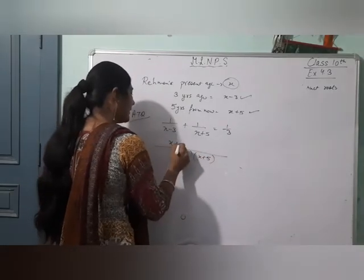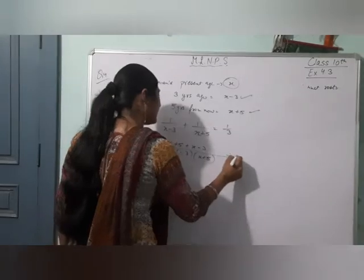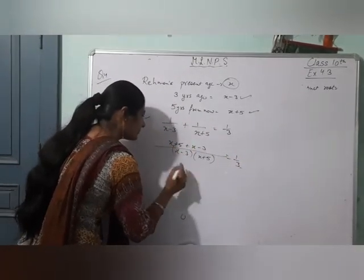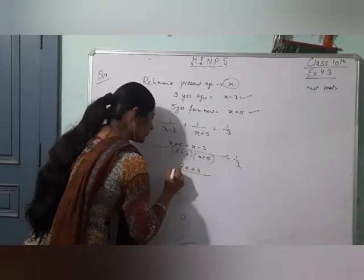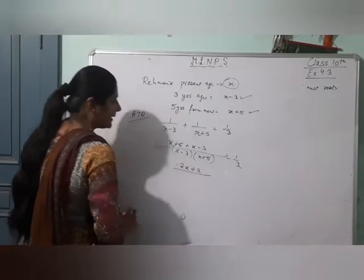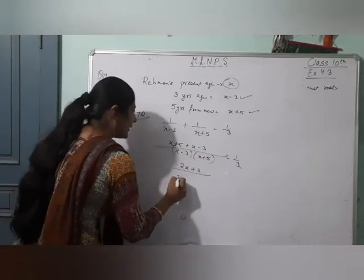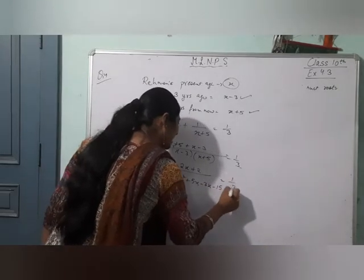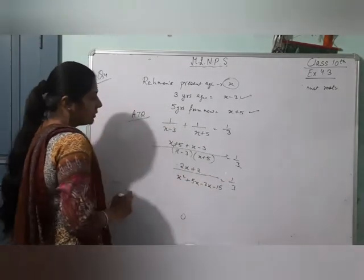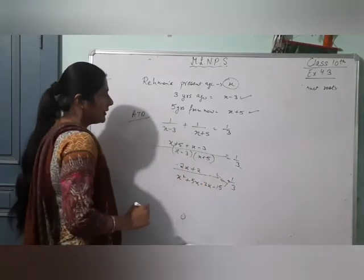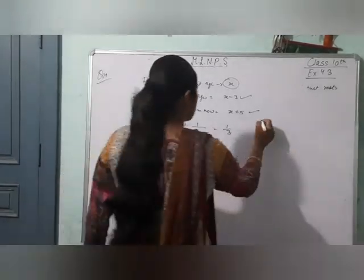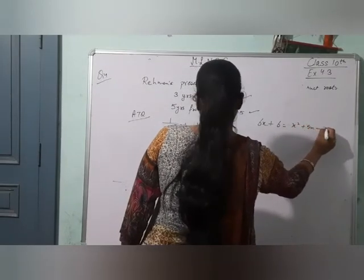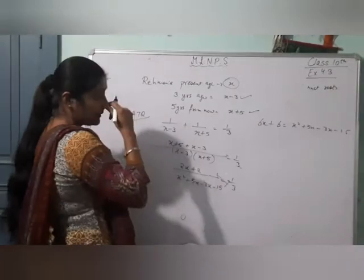You are getting 2x plus 2 over (x minus 3)(x plus 5) equals 1 by 3. Cross multiply: 3(2x plus 2) equals (x minus 3)(x plus 5). Expanding: 6x plus 6 equals x square plus 5x minus 3x minus 15. So 6x plus 6 equals x square plus 2x minus 15.